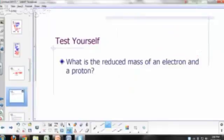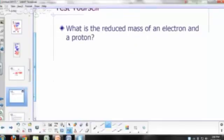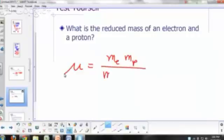What's the reduced mass of an electron and a proton? Okay, so mass of electron, mass of proton divided by mass of electron plus mass of proton. So again, let's do some simplifying approximations here.